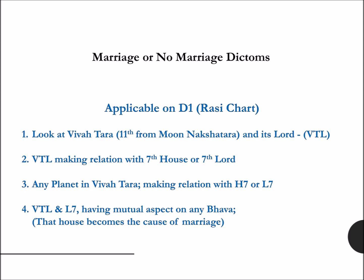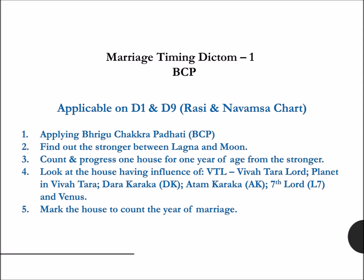If you remember, in the marriage or no marriage concept we took two pointers: first, the Vivatara and its Lord, the Vivatara Lord; and the second, the Seventh house and its Lord. Similarly, for timing of marriage we will take two pointers: first, the Bhrigu Chakra Padrati BCP rule, and second, the Ashtotri Dasa. With the help of these two principles, we will try to find out the points of mutual affirmation in the Navamsha charts also.